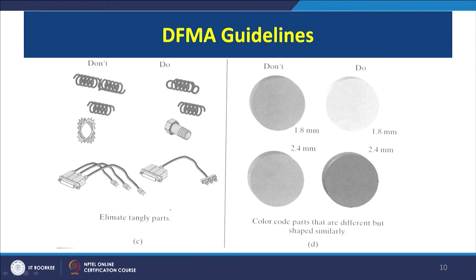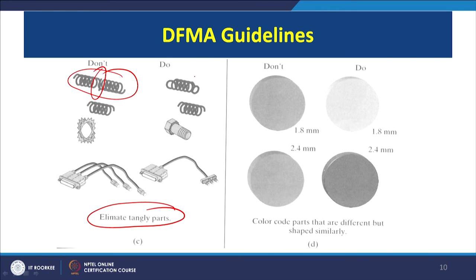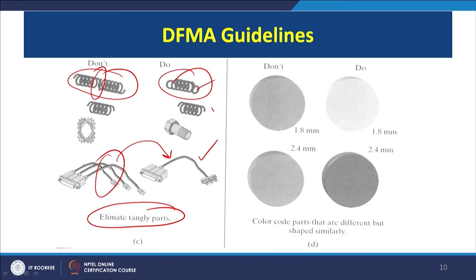DFMA Guideline 3: eliminate tangled parts. We have to avoid entangling of parts when products are assembled manually. Parts that may entangle can be redesigned so they do not tangle. For example, 3 wires that tend to entangle can be redesigned as a single wire enclosing all 3 sub-wires, so the modified part avoids entanglement entirely.